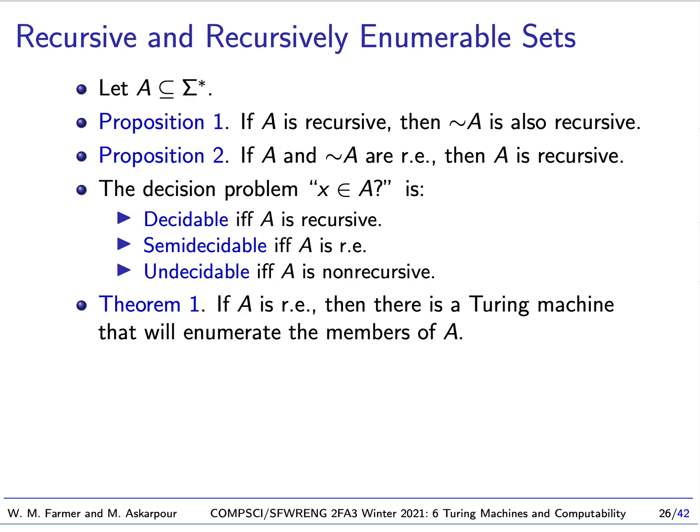We're going to continue with the topic of Turing Machines and Computability. Last time we talked about the definition of a Turing machine and we introduced the notion of a recursively enumerable set and a recursive set. If we have a set A, it's recursively enumerable if it's accepted by some Turing machine and it's recursive if it's accepted by a total Turing machine.